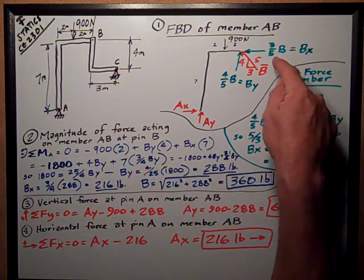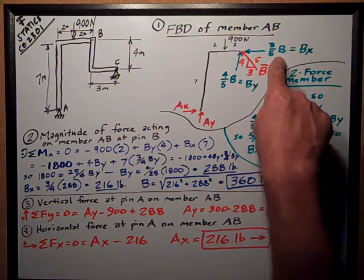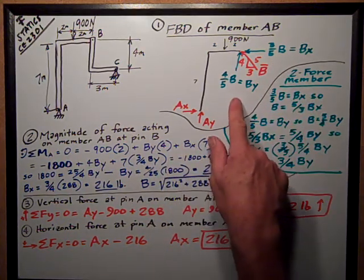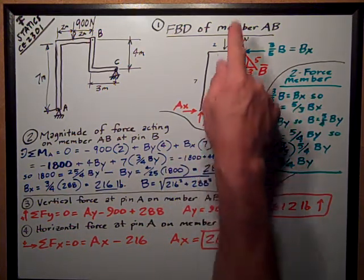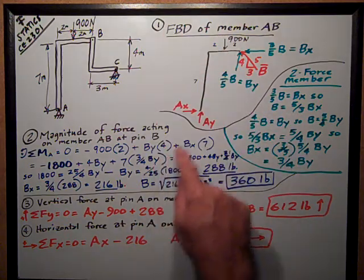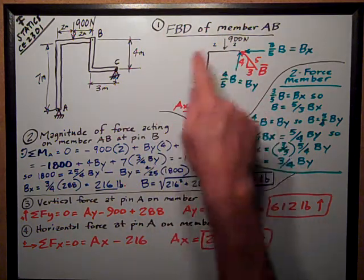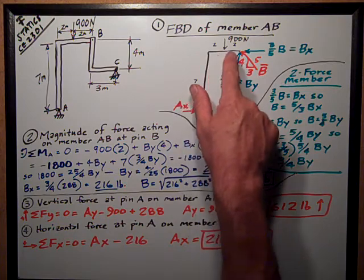Going back to my free body diagram, BY, which is the up reaction, which is positive rotation counterclockwise, times its moment arm of 2 plus 2 or 4.